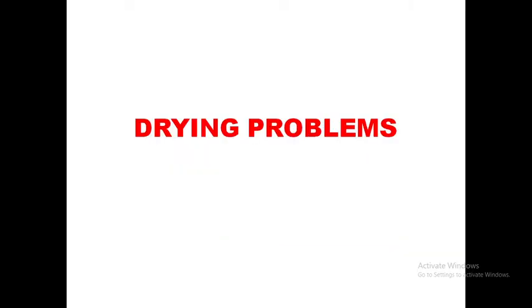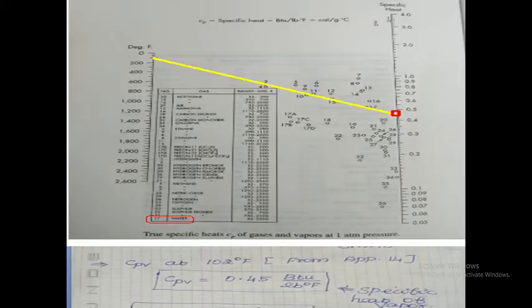Hello students, we are going to discuss about drying problems. We are going to take specific heat of vapor from the specific heat of gases and vapor at 1 atmospheric pressure graph. This figure shows the specific heat of gases and vapor at 1 atmospheric pressure. This graph is also taken from Unit Operations of Chemical Engineering by McCabe and Smith.